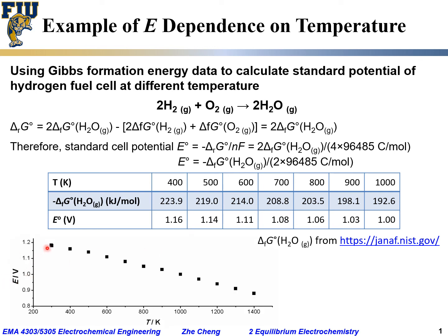If you plot that up, the standard cell potential decreases with increasing temperature. This example illustrates that cell potential will depend on temperature for a given electrochemical reaction.